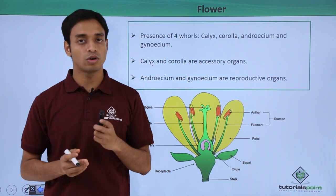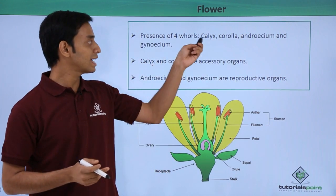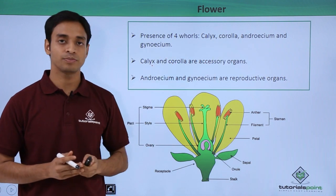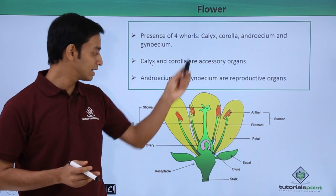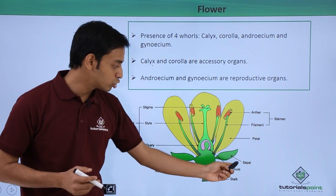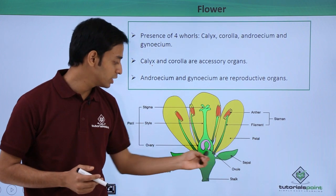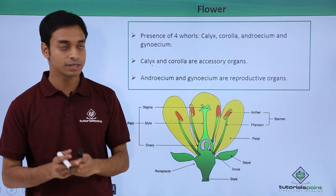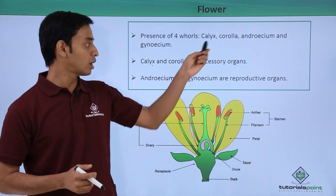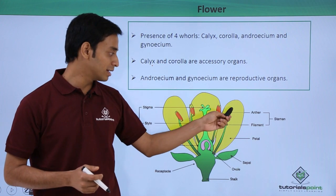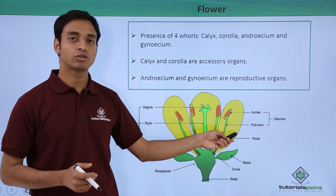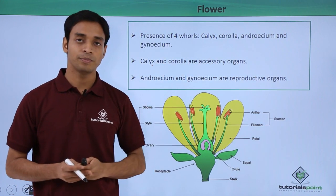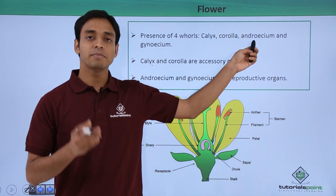The calyx is also known as the sepals — as you can see, these green leaf-like structures are the calyx or sepals. The corolla refers to the petals; these yellow structures are known as the petals or the corolla.